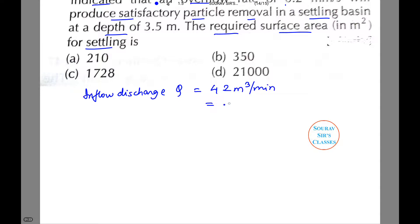This is equal to 0.07 meter cube per second. Now the overflow rate, and I am denoting it by V₀, is 0.2, or it can be written as 0.2 times 10 to the power of minus 3 meter per second.